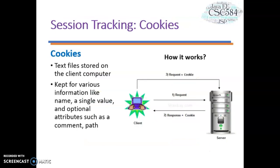Let's look at session tracking using cookies. A web server can assign a unique session ID as a cookie to each web client, and subsequent requests from the client can be recognized by the received cookie. By default, each request is considered a new request. In the cookie technique, we add a cookie with the response from the servlet. The cookie is stored in the cache of the browser — for example, Chrome or Firefox — at the client side. After that, if a request is sent by the user, the cookie is added with the request. Thus we recognize the user as the old user.